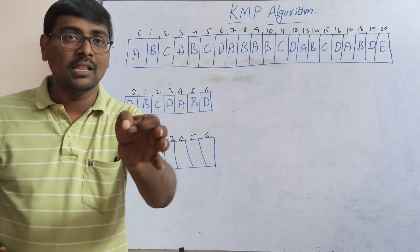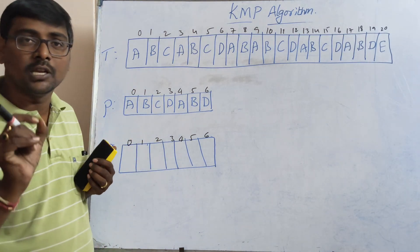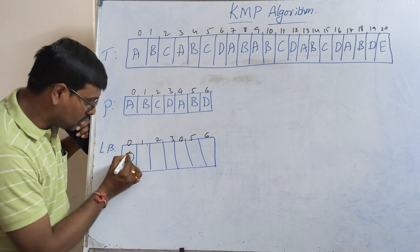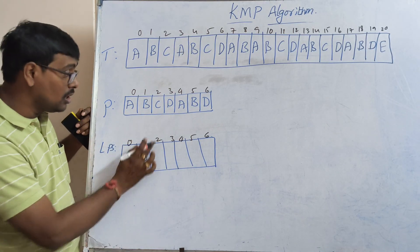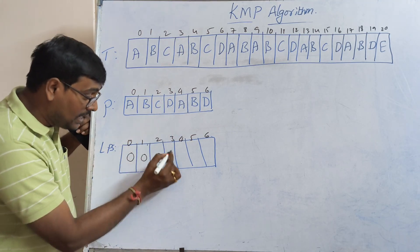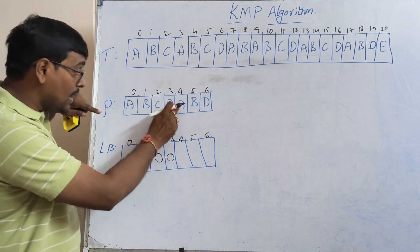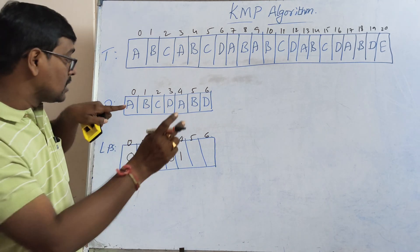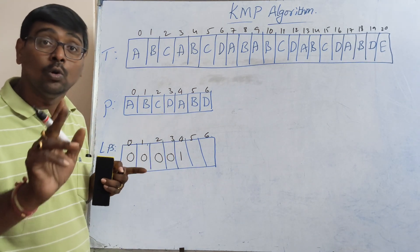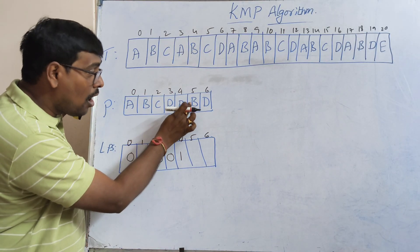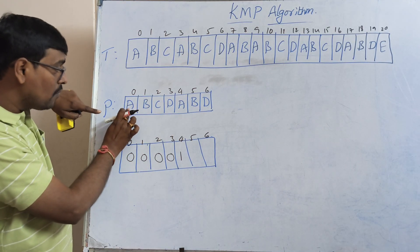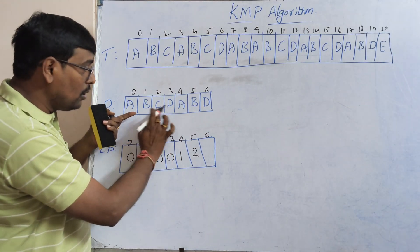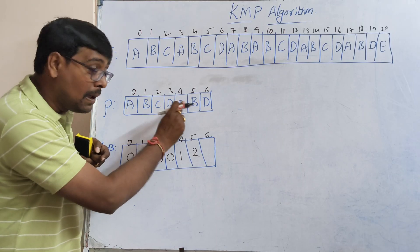We now build the LPS table for the given pattern. The first letter is 'a' — not repeated, so zero. 'b' is not repeated, zero. 'c' is not repeated, zero. 'd' is not repeated, zero. Now 'a' is already repeated, so one. 'b' is already repeated, and since 'b' follows 'a' here just as it did previously, the value of 'b' is 2.